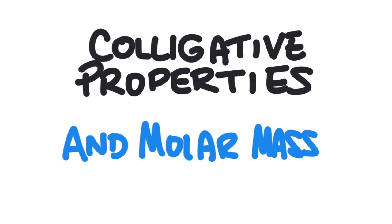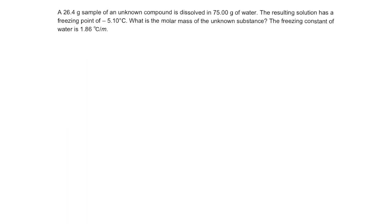In this video we're going to learn how to determine the molar mass of a substance based on its colligative properties by solving this problem. A 26.4 gram sample of an unknown compound is dissolved in 75 grams of water. The resulting solution has a freezing point of negative 5.10 degrees Celsius. What is the molar mass of the unknown substance? The freezing constant of water is 1.86 degrees Celsius per mol.